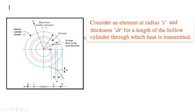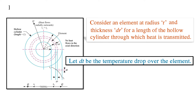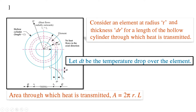Consider a small element at radius r and thickness dr for a length of the hollow cylinder through which heat is transmitted. The thickness of this small element is dr, it is at distance r from the origin of the cylinder, and here q is the heat transfer in the cylinder. Let dt be the temperature drop over the element.